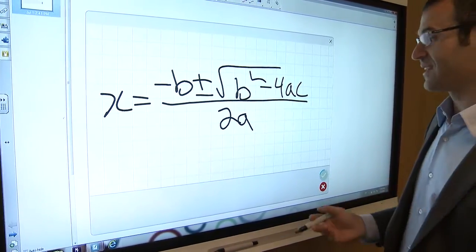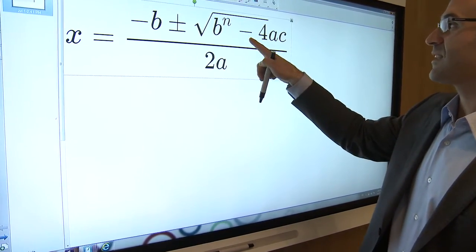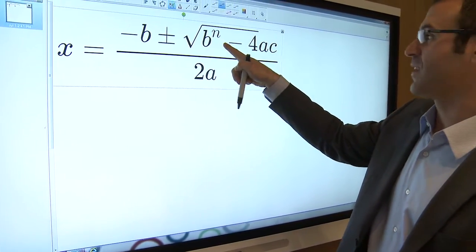I could have it recognize it, and then if I notice that my equation has an error in it, and I actually did that on purpose,